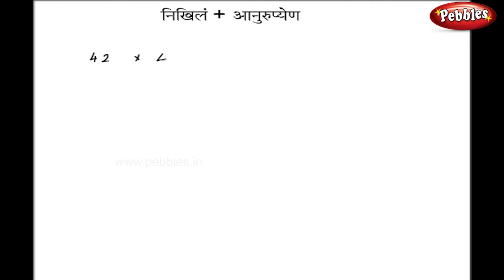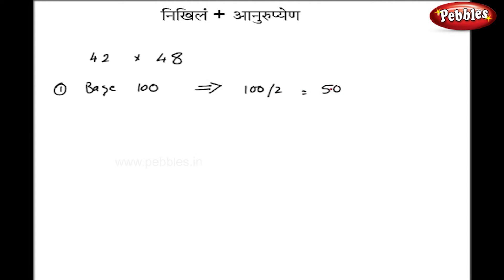I will take 42 into 48. Now in this case, both figures are neither near to 10 nor 100. So I have to modify my base. As a first case, I will take my base equal to 100. Now I have to manipulate my base using Anurupyena. I will do 100 divided by 2, that is 50. So now 50 is my new base. The rest of the calculations are the same except for the new base.